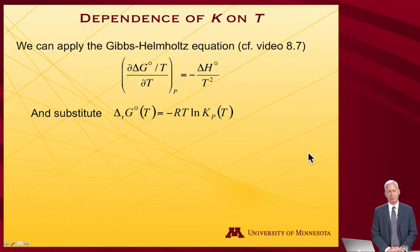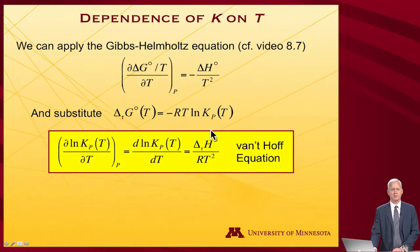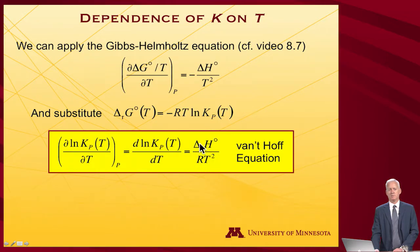I'll refer you back to video 8.7 if you want to see the Gibbs-Helmholtz equation in its original form, but I'm going to substitute in for a delta G quantity the relationship to the equilibrium constant. I'll get that the partial log of the equilibrium constant with respect to T is equal to d(log Kp)/dT, because it only depends on T — this is just a recognition that the equilibrium constant depends only on temperature, so I can write it as a normal derivative. Keeping track of the factor of R, I end up with the enthalpy of reaction divided by RT², and that's known as the Van't Hoff equation.